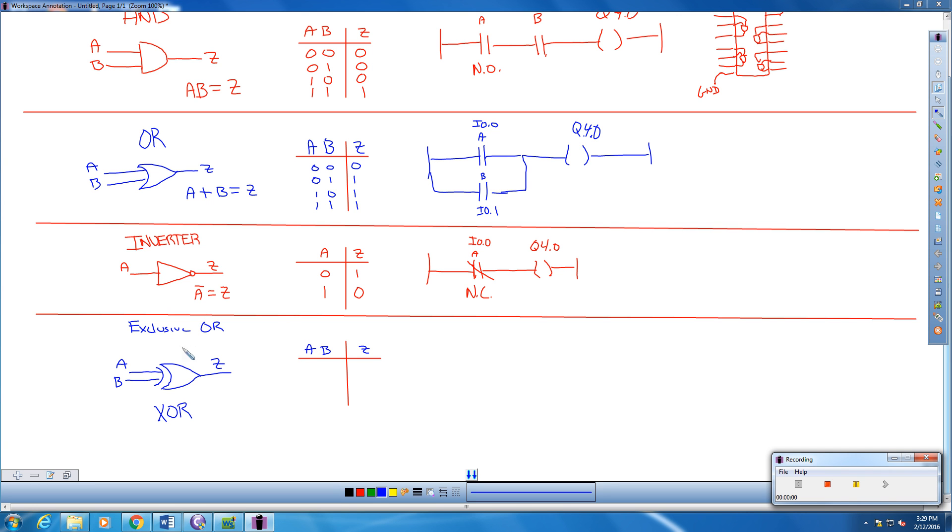We're going to take a look at the exclusive OR. This is what it looks like. It's an OR gate, and you have an extra curved bar here. And we still have our same inputs A, B, our output of Z, and we denote it as XOR, standing for exclusive OR.